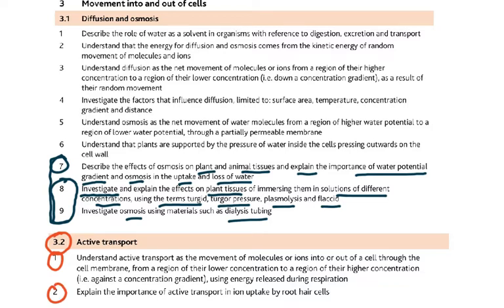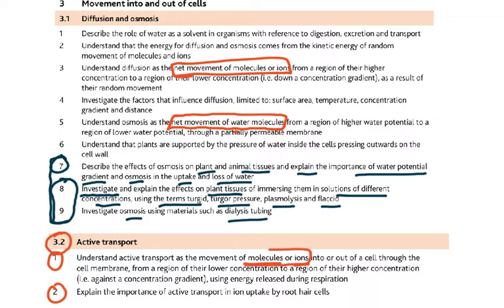In active transport, we have to understand it as the movement of molecules or ions. Diffusion is the net movement of molecules or ions. Osmosis is only the net movement of water molecules — this is important to remember. So in diffusion we have molecules and ions, and in osmosis we only have movement of water molecules. This is a change in the new syllabus; it wasn't in the old syllabus.